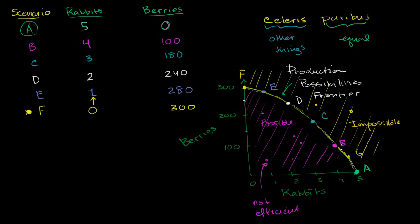Well, I'm going to have to stay on my production possibilities frontier, and so I'm going to move to Scenario E. So if I go after that one extra rabbit, I am going to give up 20 berries. So my opportunity cost in Scenario F, sitting in Scenario F, of going after that one rabbit is 20 berries.